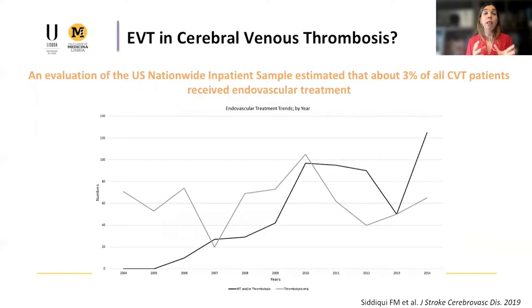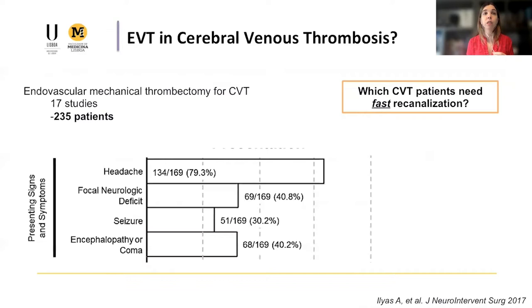Endovascular treatment is done all over the world. From the United States nationwide inpatient sample, even before the advent of modern endovascular treatment between 2004 and 2014, about 3% of all CVT patients received endovascular treatment. Looking at who is treated: observational data from a systematic review shows that 40% of patients had encephalopathy or coma, and also focal neurological deficits — suggesting this is mostly used in highly selected patients with a severe clinical presentation.